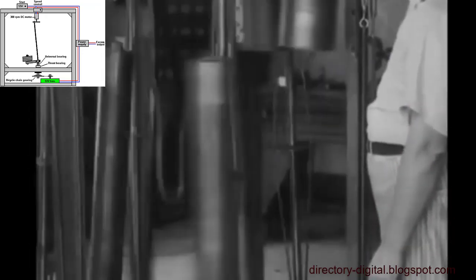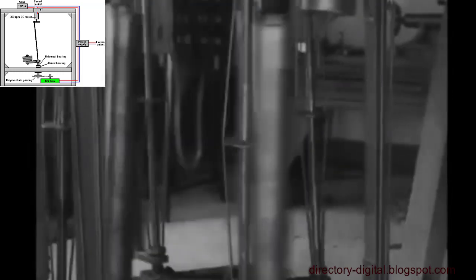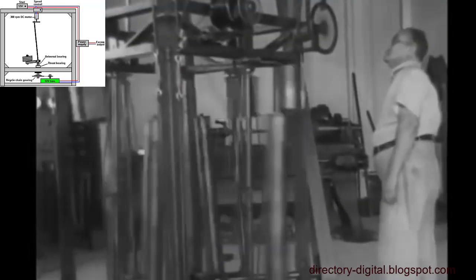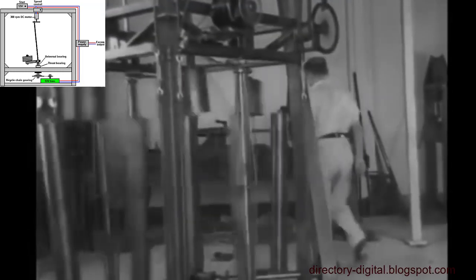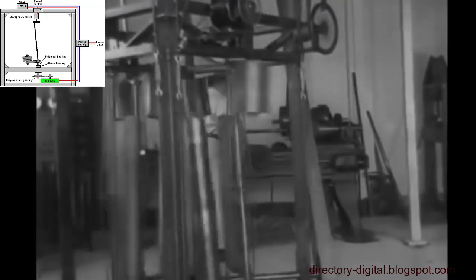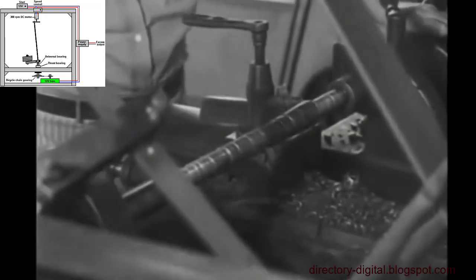Yet, undeterred, Skinner demonstrates the capabilities of his invention in his workshop. A 1/8th-horsepower motor drives the gravity power machine, which, in turn, operates heavy-duty machinery such as a 12-foot lathe and a 6-foot drill press.